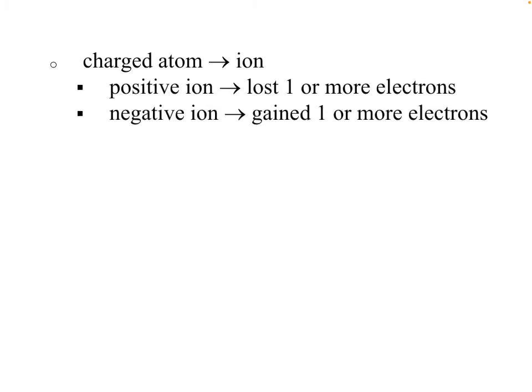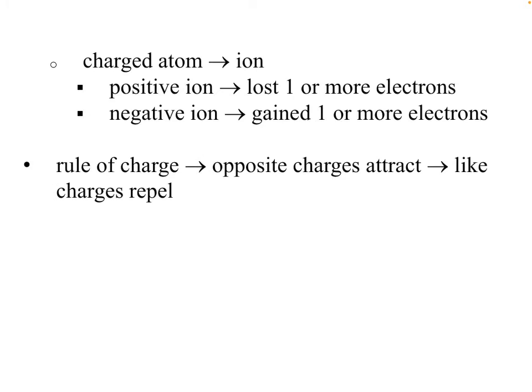A positive ion is one that has lost one or more electrons. If it's lost one electron, it has one positive charge; if it's lost two, it has two positive charges, and so on. A negative ion has gained electrons, so it has more electrons than protons. The rule is that opposite charges attract — a positive and a negative will attract each other — and like charges repel each other. That's the knowledge from Science 9.